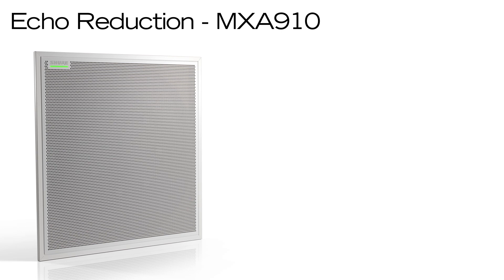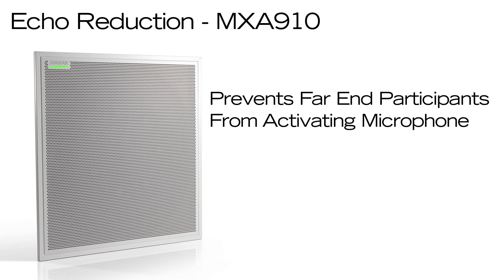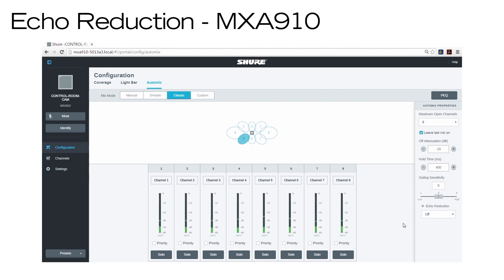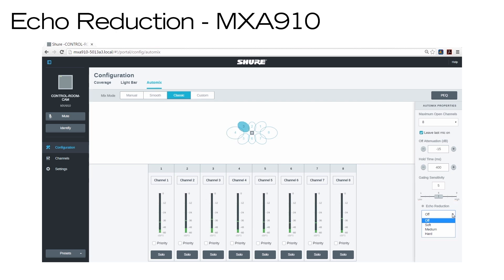The MXA910 AutoMix channel employs a simple way of reducing acoustic echo by preventing far-end participants from activating local microphone channels. It's very effective as a front-end to codecs with single-channel acoustic echo cancelers. Use Dante Controller software to route the incoming far-end audio channel to the echo reduction reference input channel. On the MXA910's AutoMix channel, you can enable echo reduction by selecting a strength setting. Soft, medium, and hard settings provide far-end attenuation and apply gain to the reference channel to ensure proper gating.